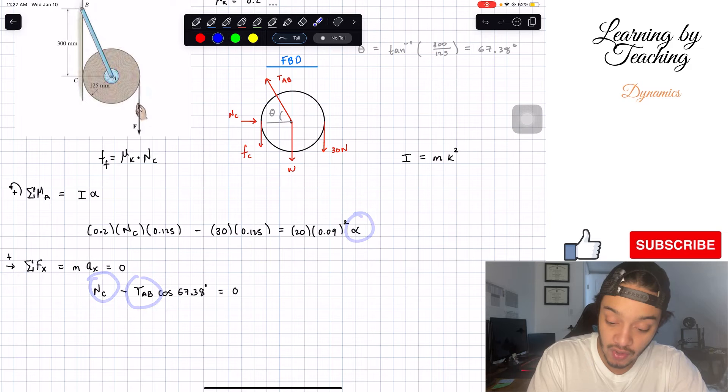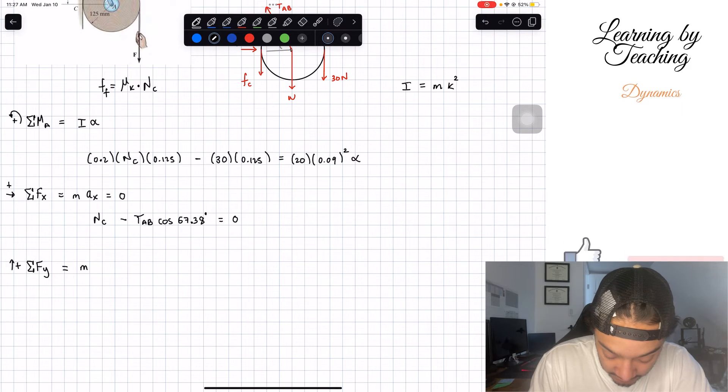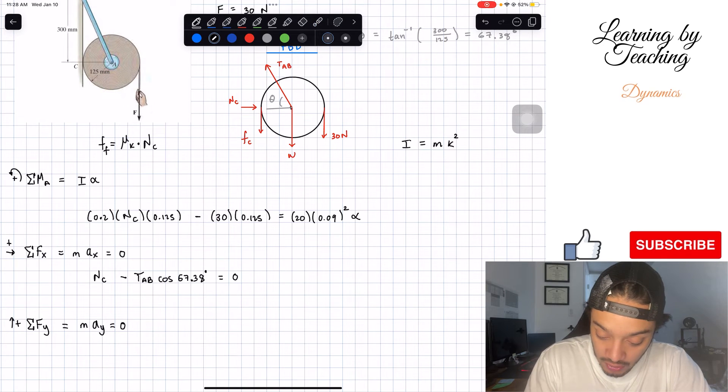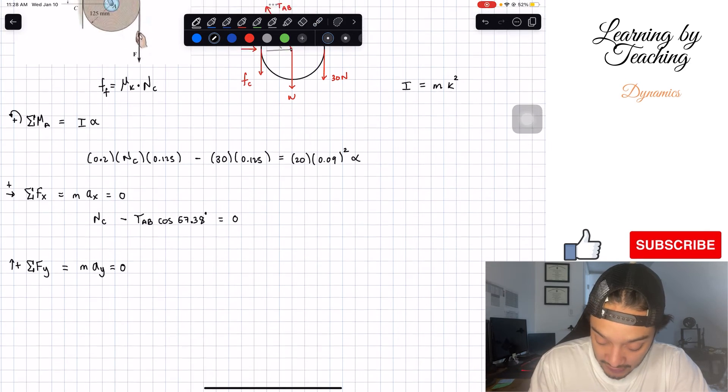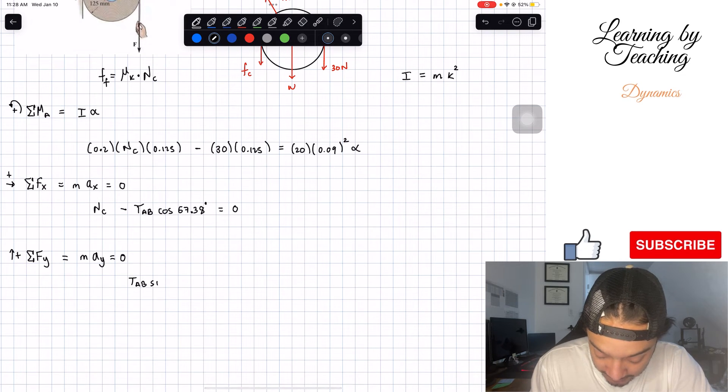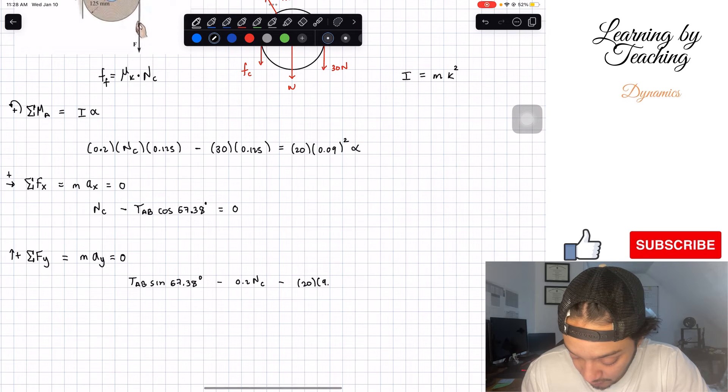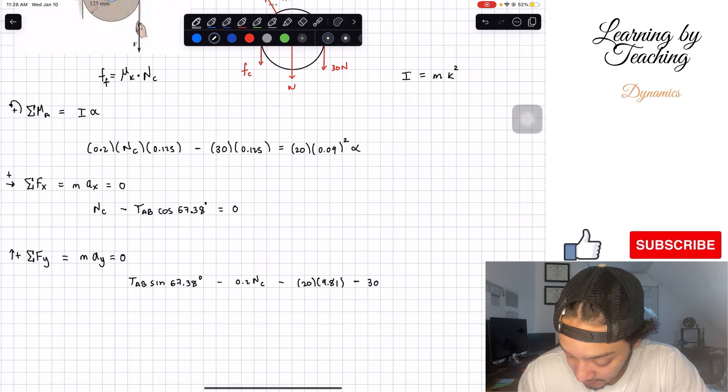We're going to go ahead and do another sum of our forces in the y direction. We're going to assume that going up is positive. And similarly with our summation of forces in the x direction, this is going to be equal to 0 because we're not moving neither up or down. What forces do we have going in the vertical axis? We have the frictional force, the weight, our 30 newtons all going down, and the positive tension AB. So we got our tension AB multiplied by the sine of 67.38 minus our frictional force 0.2 N sub C. Then we're going to have minus the weight, which is 20 kilograms times 9.81, the mass times gravity, minus our 30 newtons. And all this should be equal to 0.